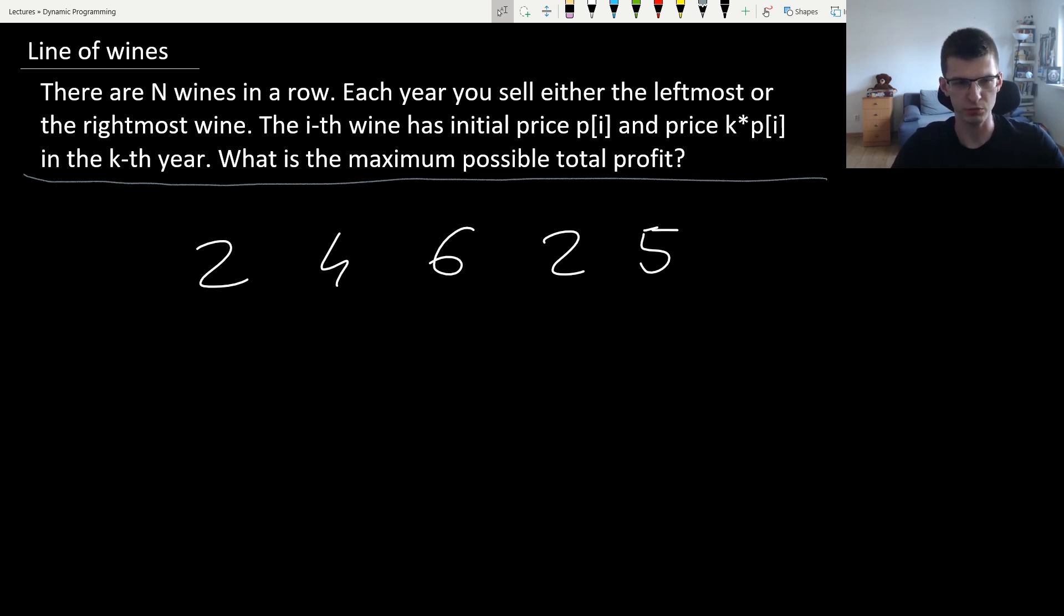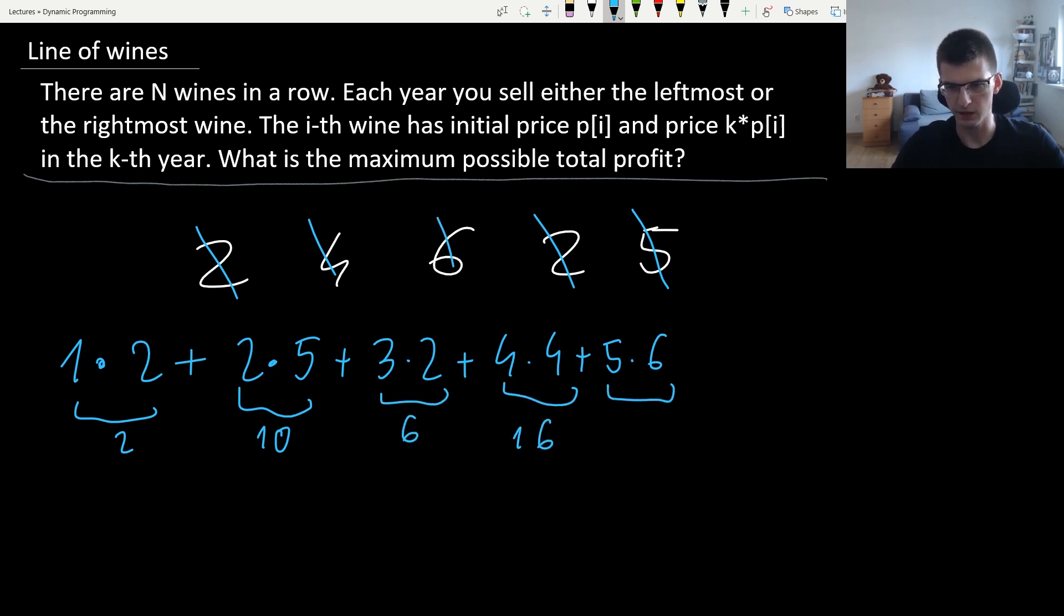An optimal solution for this example would be to sell the leftmost wine in the first year. For this we get 1 times 2 money, which is 2. Then in second year sell the rightmost wine. In the second year sell one with initial price 5. This is 10. Plus in third year sell this one for 2, plus in fourth year sell that one for 4 times the year, and 5 times 6 in the last year. This is 6, 16, and 30. We have 12, 18 plus that, it's 34. In total it's 64.